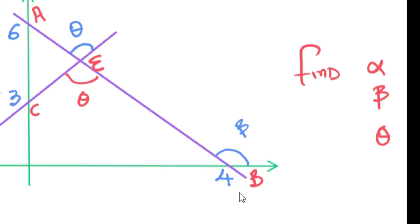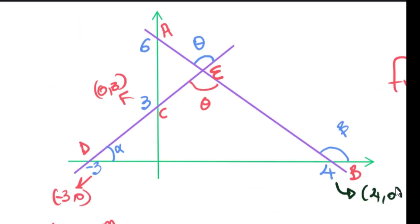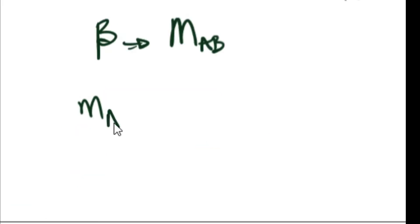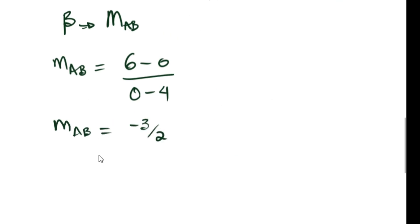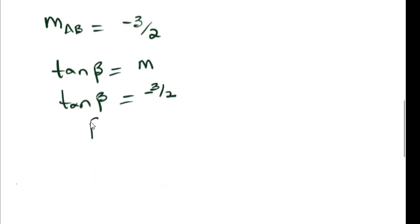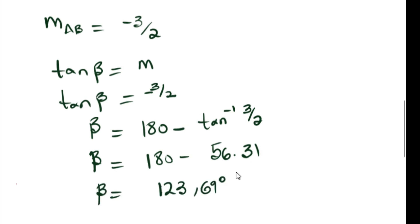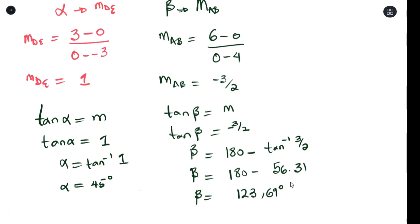Now we also see that B has a coordinate of 4 and 0 and at A that's a coordinate of 0 and 6. So all I do is substitute that into the gradient formula. So then I use the angle of inclination formula to get the angle of beta. So the angle beta would be 123.69 degrees.